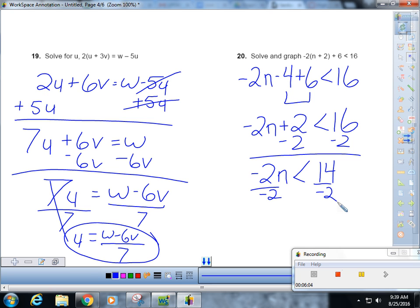Divided by negative 2. Remember, when we divide by negative, what do we got to do to the sign? Flip it. Very good. So you get n is greater than negative 7. It wants us to graph that.